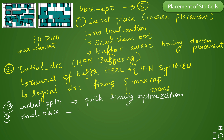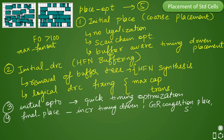The fourth stage is called final place. In final place, the tool does incremental timing-driven optimization — fixing whatever timing issues were left from the previous stage. It also tries to fix global route congestion. If congestion is high due to cell density or other causes, it does global route congestion-driven placement. Scan-related violations are also fixed here.